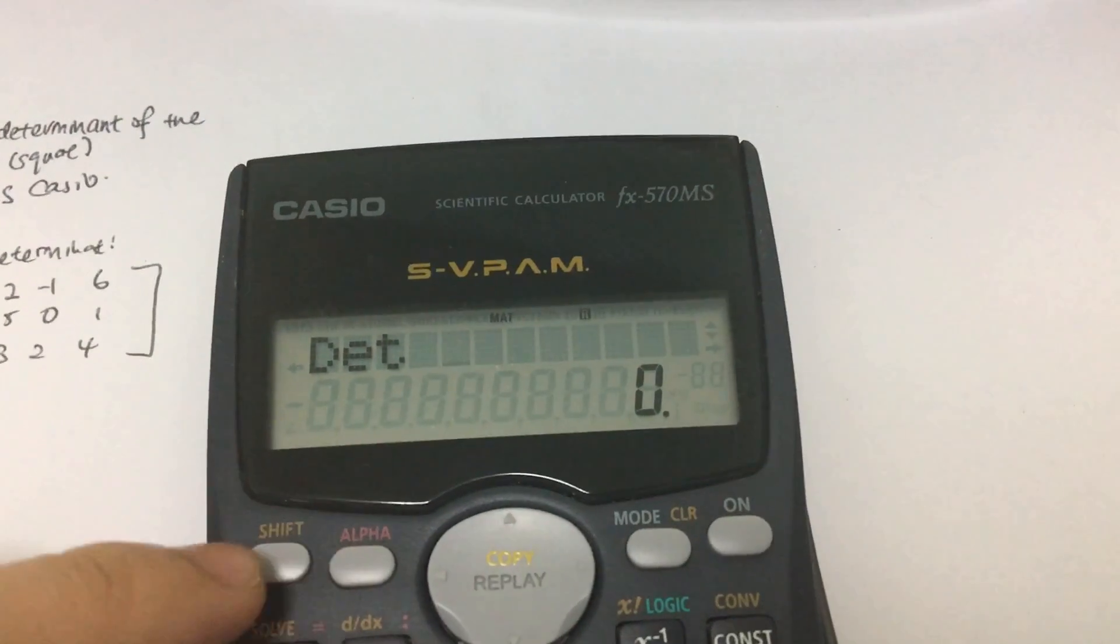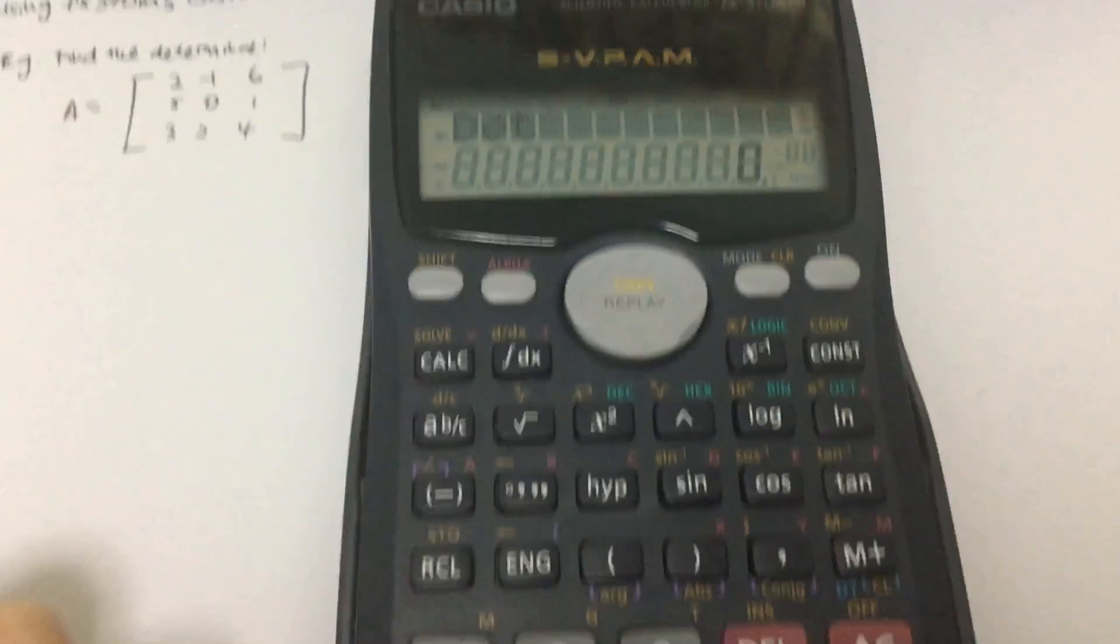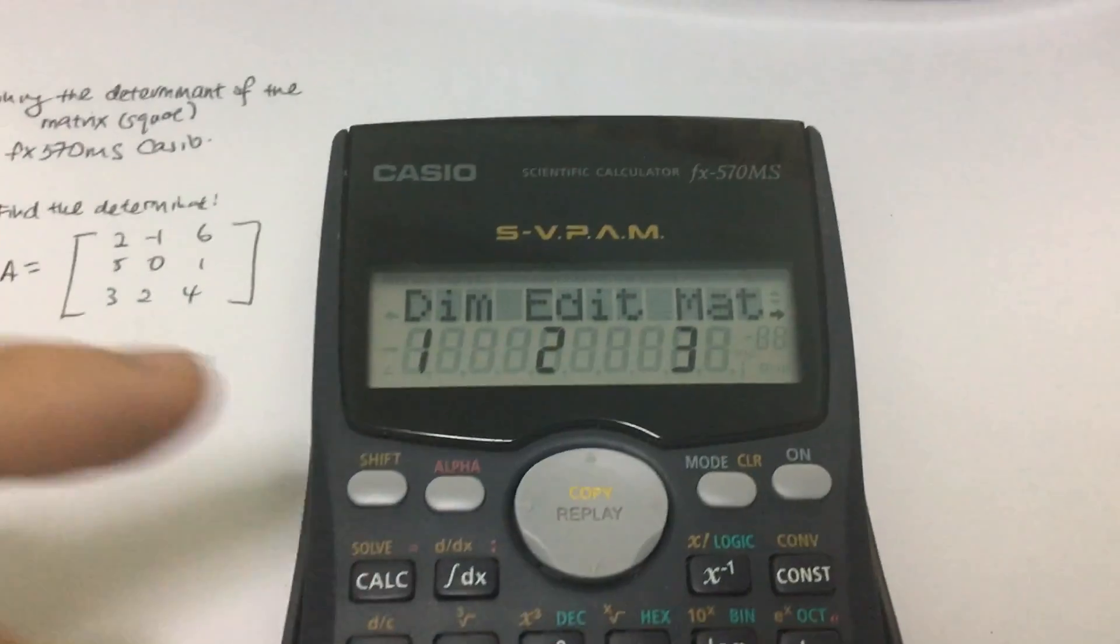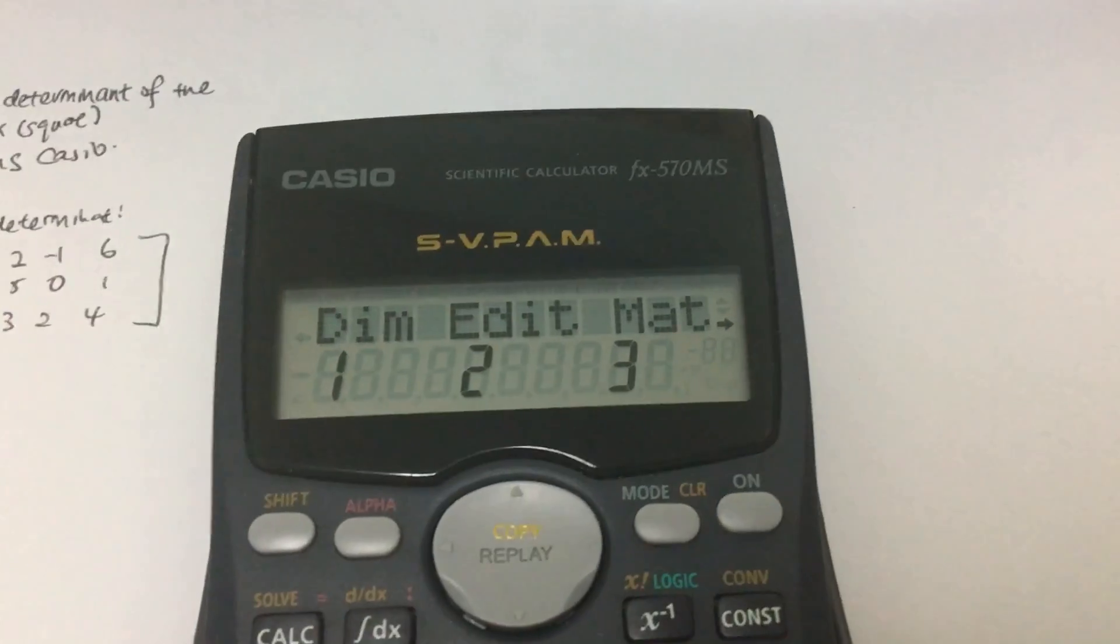So how do we include this matrix A is very simple, we click shift, and we click mat, and you go to this thing, and press three,